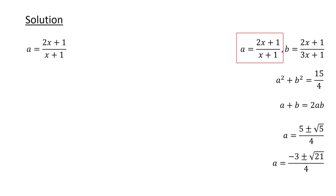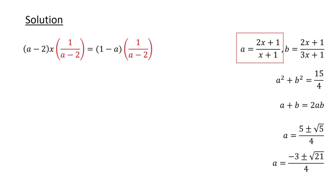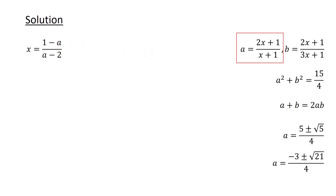Given that a equals 2x plus 1 over x plus 1, let's express x in terms of a. We do so by multiplying both sides by x plus 1 to clear the denominators, then moving 2x to the left side and a to the right side. Factoring the left side and dividing both sides by a minus 2, we get x equals 1 minus a over a minus 2.